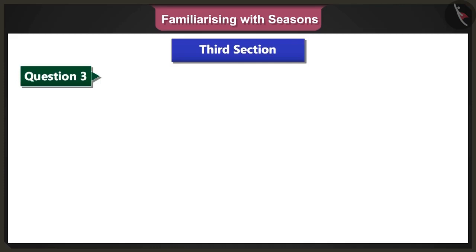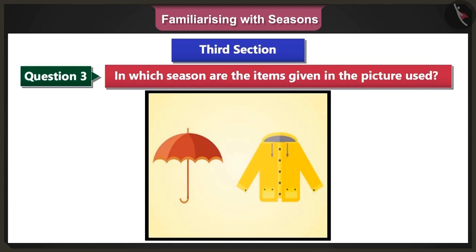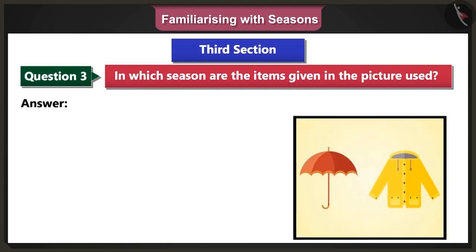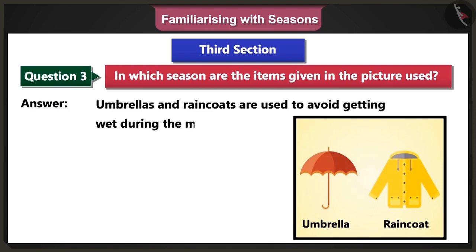Third question: In which season are the items given in the picture used? Answer: Umbrellas and raincoats are used to avoid getting wet during the monsoon season.